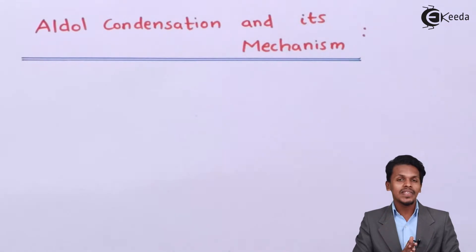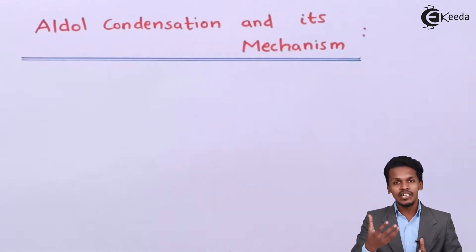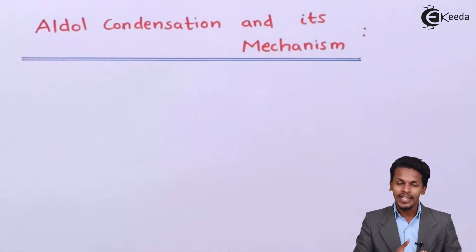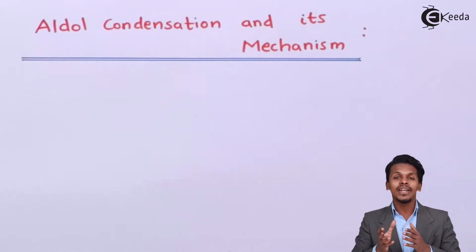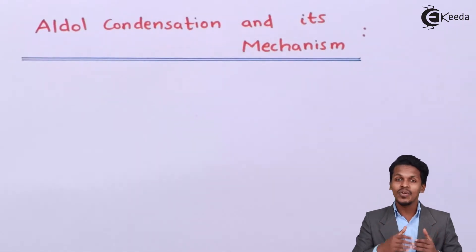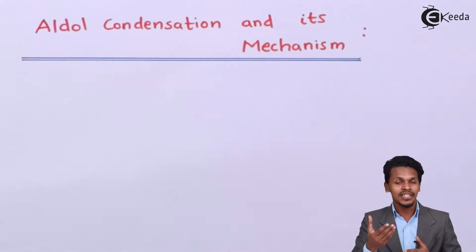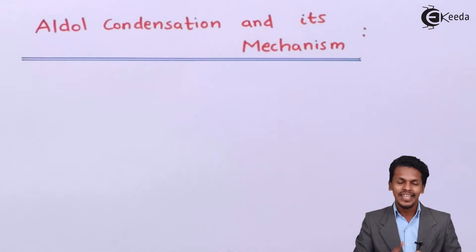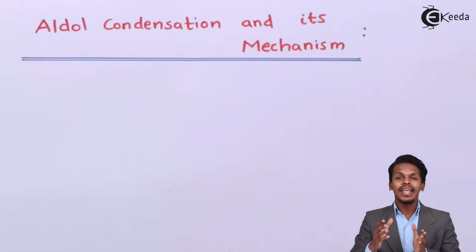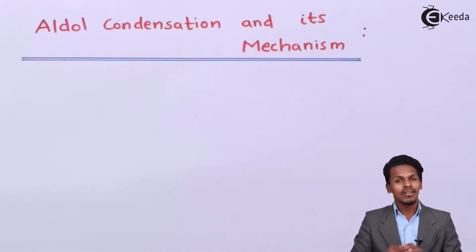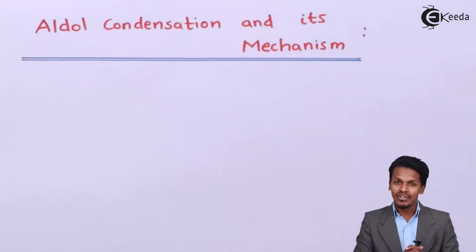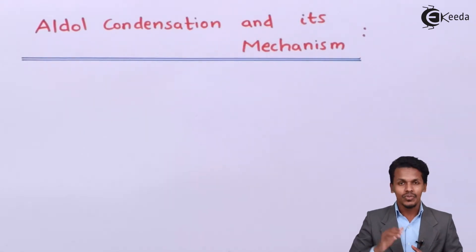This is how the reaction proceeds and the product formed is known as aldol — meaning it consists of both an aldehyde functional group and an alcohol (OH) group. That is where the name 'aldol' arises. This kind of reaction can be easily explained with a general reaction.